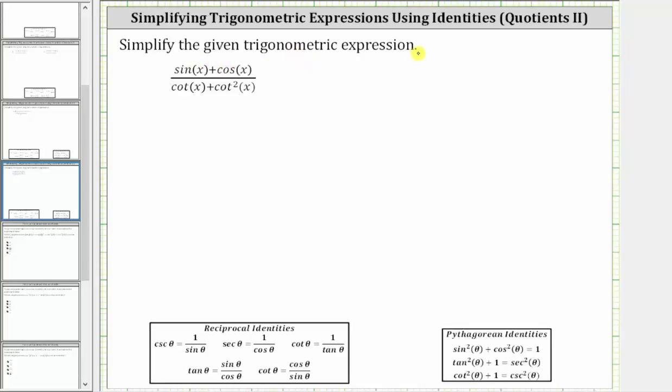We are asked to simplify the given trig expression. Let's begin by converting everything to sines and cosines, where cotangent x is equal to cosine x divided by sine x, and cotangent squared x is equal to cosine squared x divided by sine squared x.